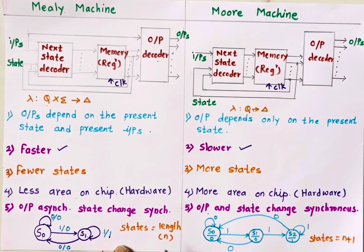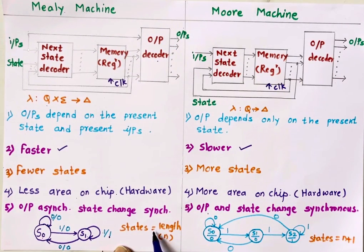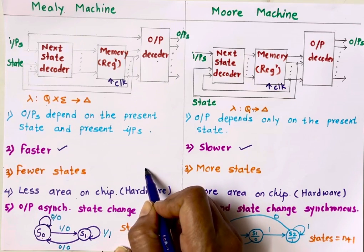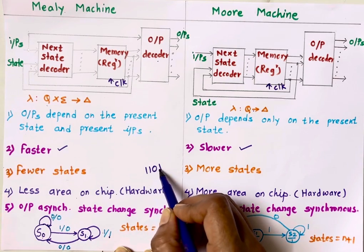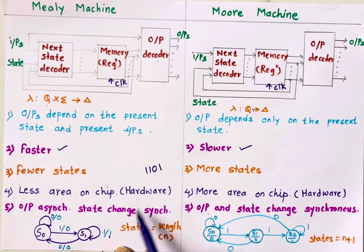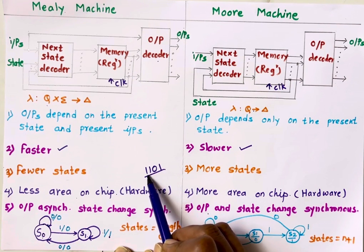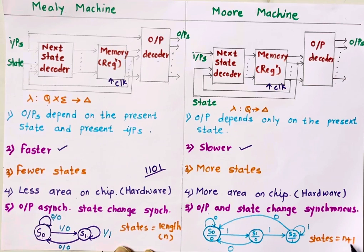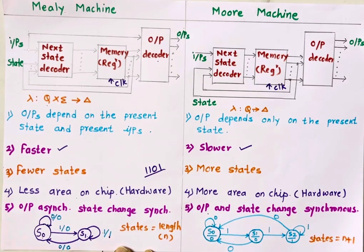For a sequence detector, in a Mealy machine the number of states is generally the same as the length of the sequence. For example, for sequence 1,1,0,1 — which has 4 bits — we need 4 states. Whereas for a Moore machine designing the same sequence 1,1,0,1 we need n+1 states, so we need 5 states.